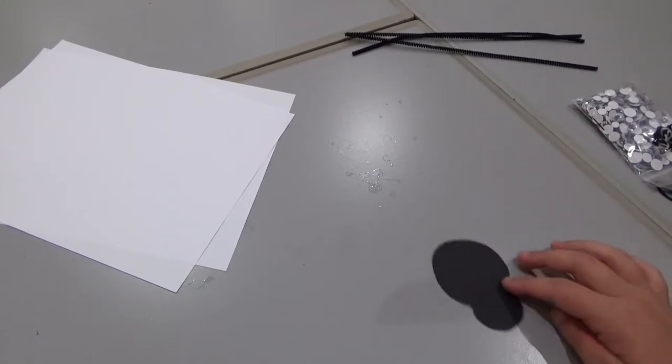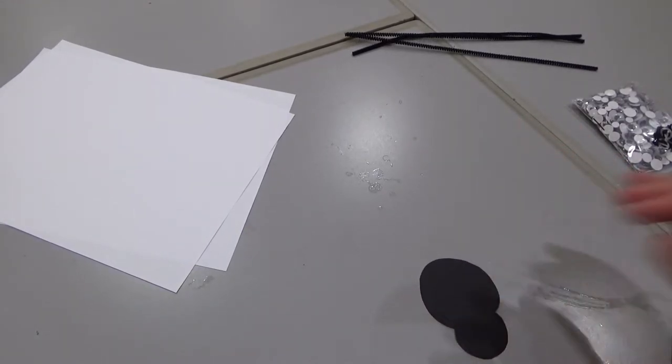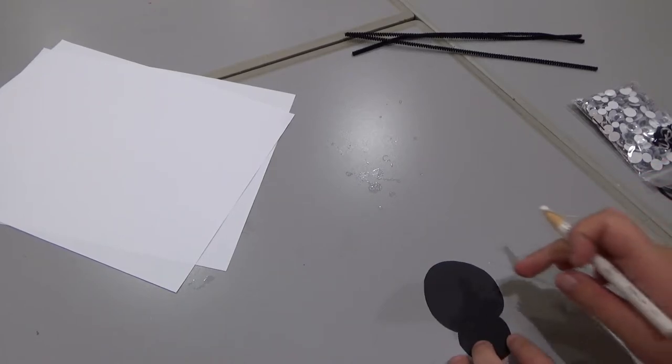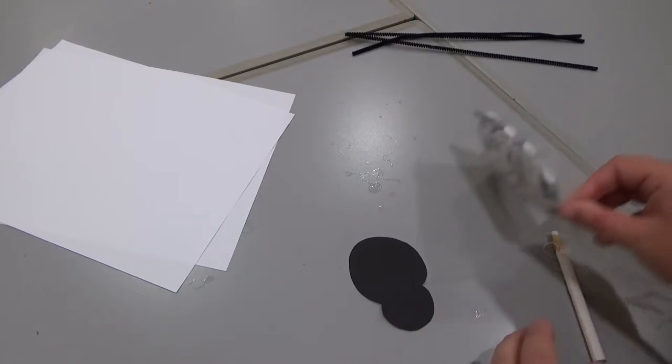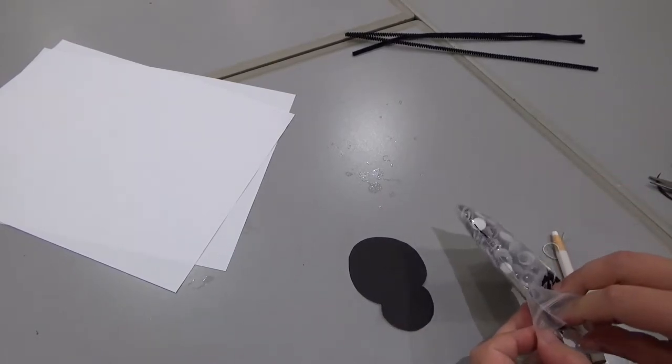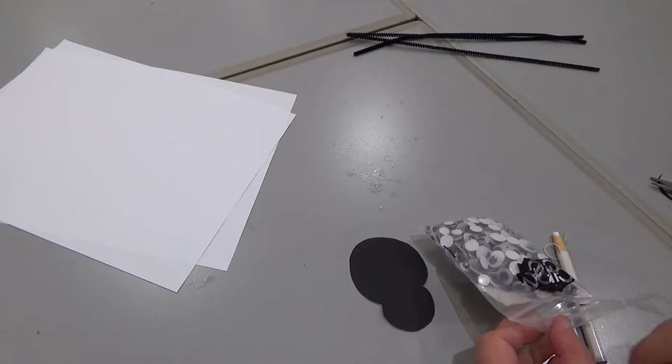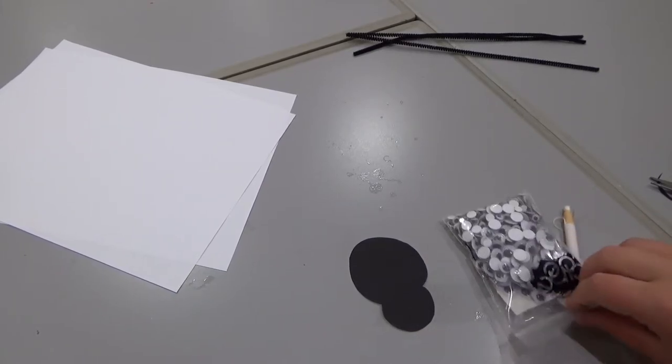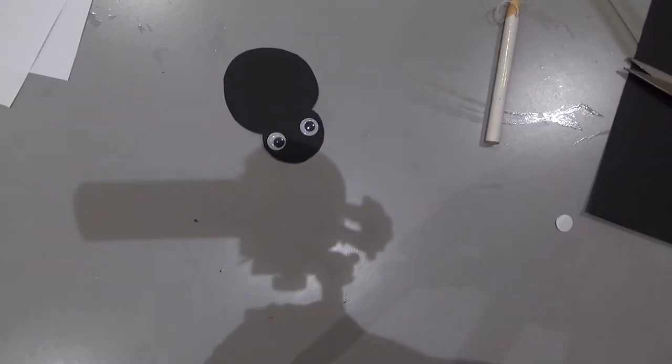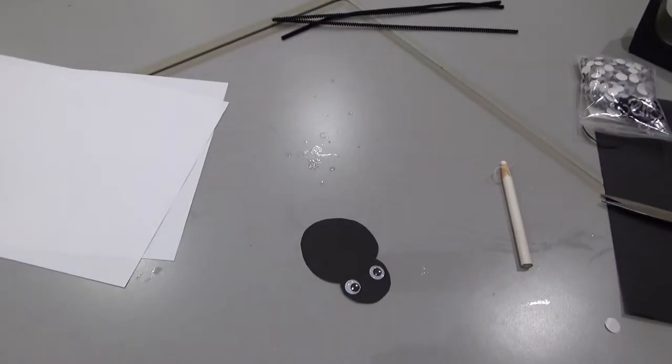Now, we flip it over, and we have the body of our spider. We actually want to decorate the spider. So this is going to be the back, and this is going to be the face. I have some googly eyes right here, and I have a white china marker. If you have a white crayon, that would work perfectly as well. As you can see here, we have the googly eyes on the spider.